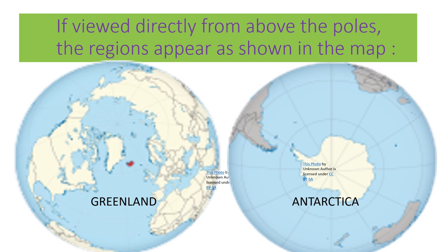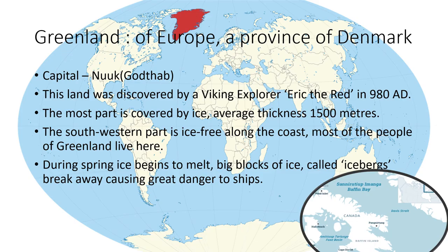If viewed directly from above the poles, the regions appear as shown in the map. You see the map. Greenland — it is a land of Europe and a province of Denmark. Capital Nuuk, also called Gotham. This land was discovered by Viking explorer Eric the Red in the year 980 AD.